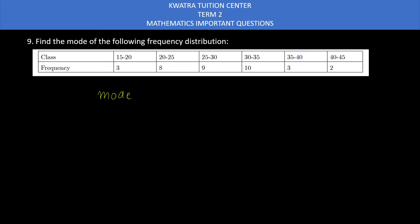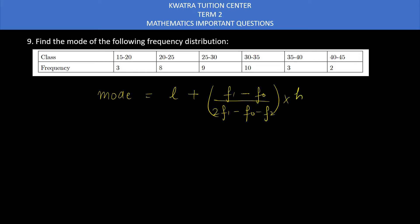What is the formula of the mode? First of all, let us write it. It is L plus F1 minus F0 divided by twice of F1 minus F0 minus F2, into H. L is the lower limit, F1 is the frequency of the modal class, F0 is the frequency of the preceding class, F2 is the frequency of the successive class, and H is the height.